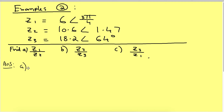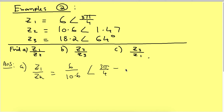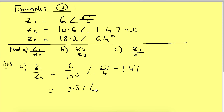Answer A. So Z1 divided by Z2 means it's 6 divided by 10.6 at an angle of 3π/4 take away 1.46. Now I know that's in radians. So Z divided by 10.6 is 0.57. You can leave it as a fraction if you want. And if you take away those angles you get 0.89.